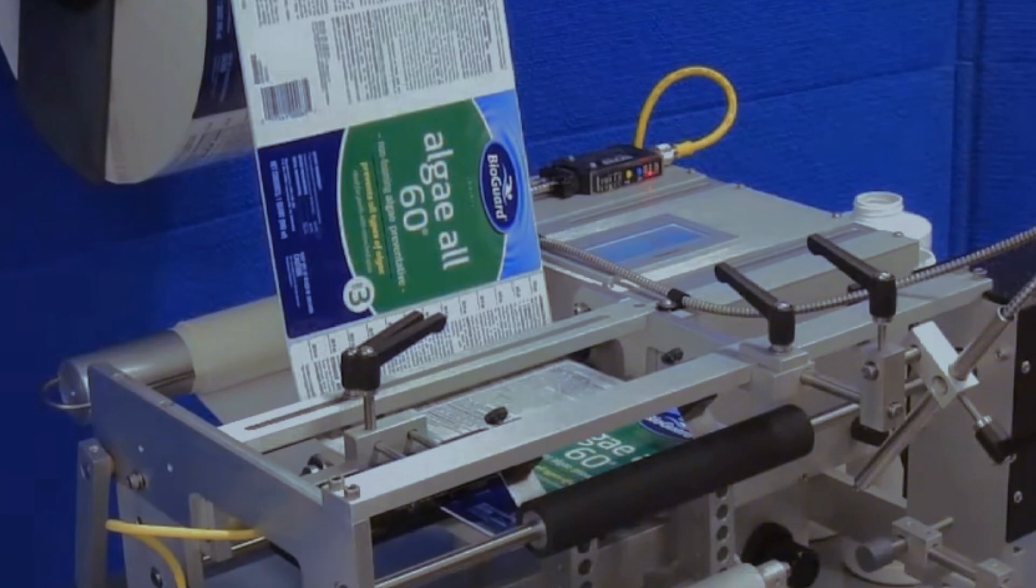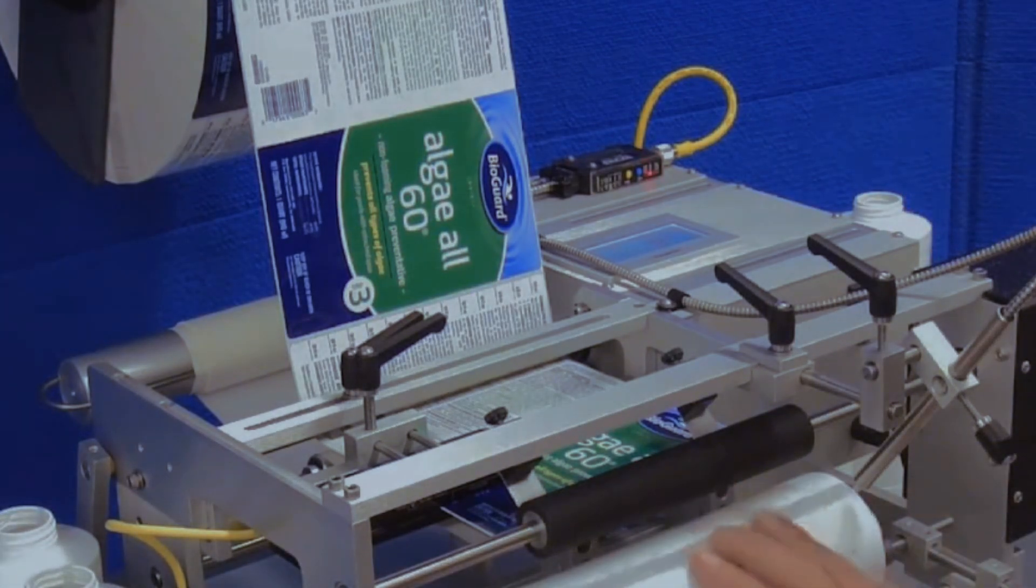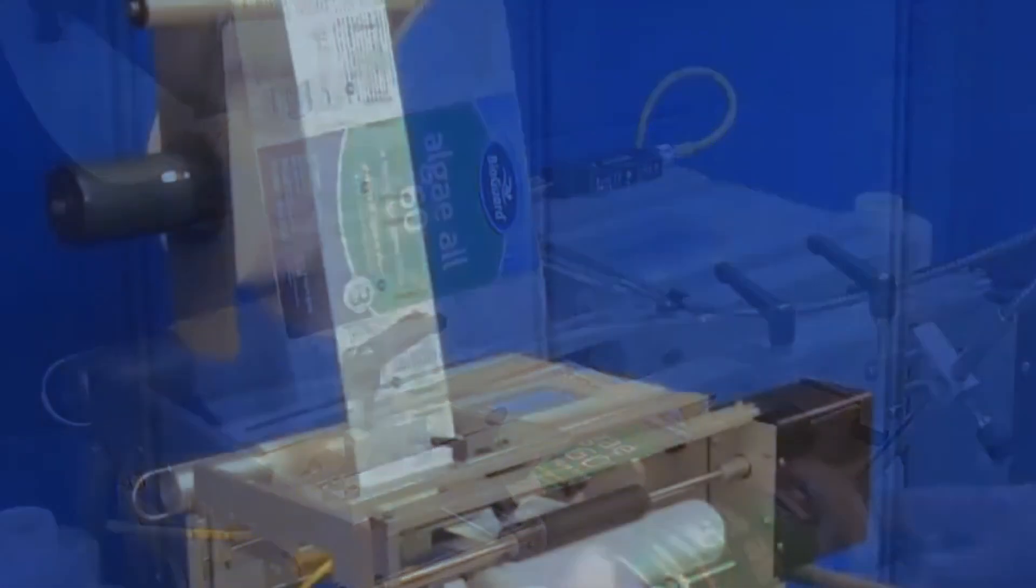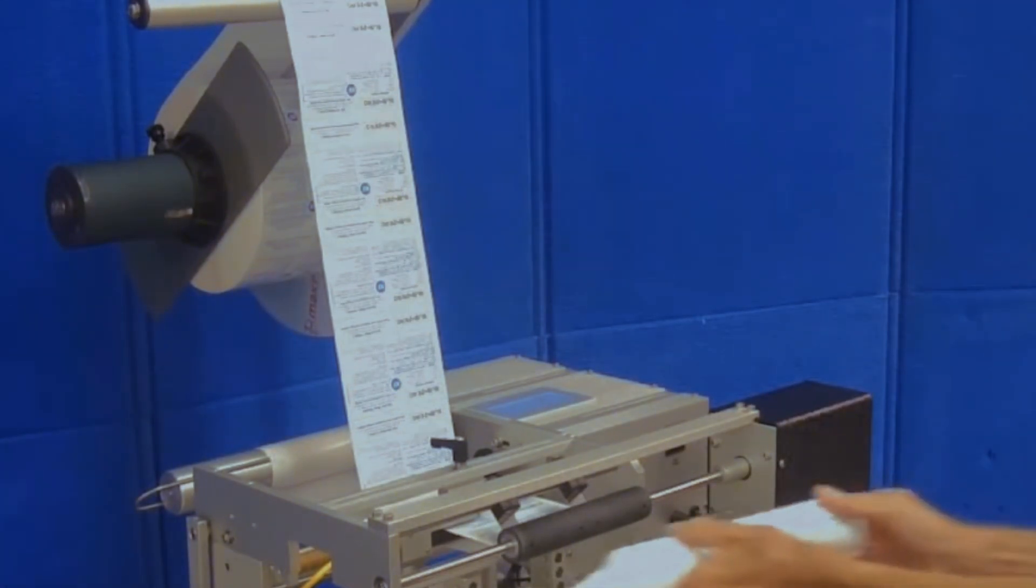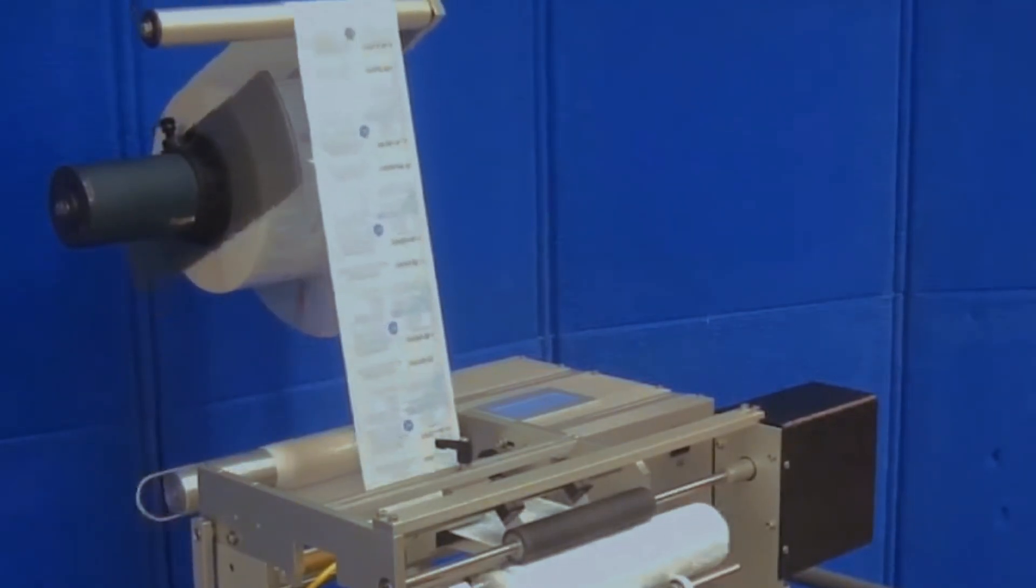Its compact footprint and modular design make it easy to integrate into existing production lines, minimizing space requirements and optimizing workflow efficiency. Food manufacturers benefit from the R310's reliability and ease of operation, enhancing productivity and product presentation.